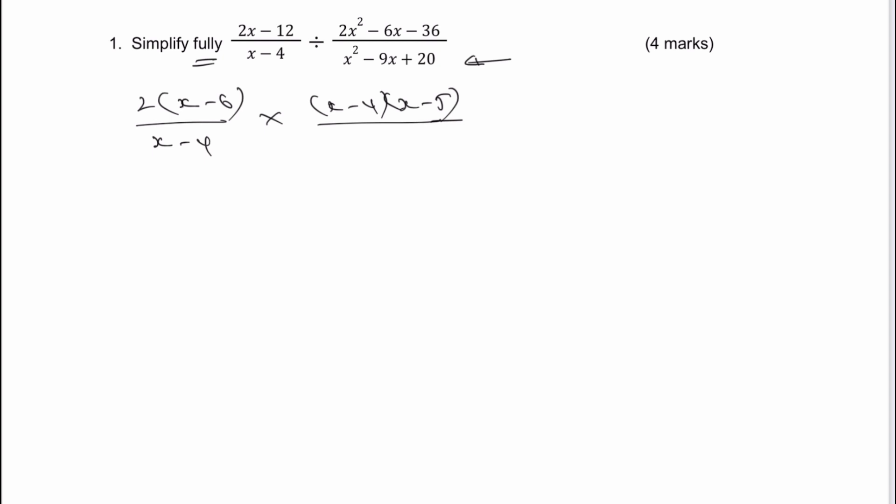Now if you're not sure about any of these things, please do let me know in the comments. I do have separate playlists that you can have a look at, especially our new denominator, which is going to be a factorisation of that. The method is we look at 2 times minus 36 and we say that's minus 72. And I'm looking for two numbers that when I multiply them together make minus 72 and when I add them together make negative 6.